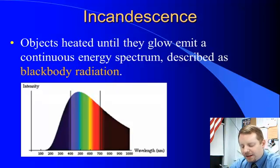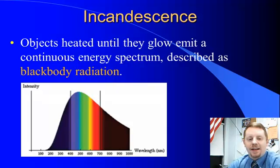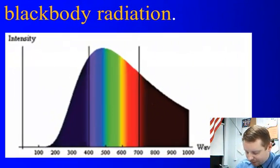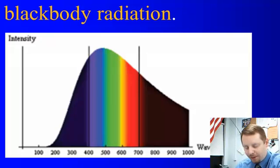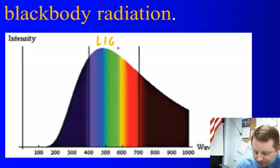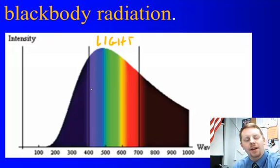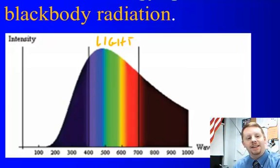When an object is heated until it glows or incandesces, such as an Edison-type light bulb, you get a continuous energy spectrum. This is known as blackbody radiation. In the diagram here, you can see wavelengths from 100 to 1000 nanometers, and visible light is from 400 to 700 nanometers. You get all the colors of the rainbow—that's incandescence.